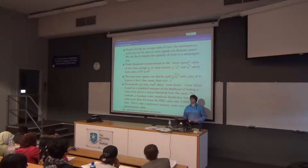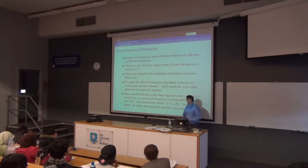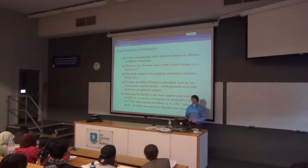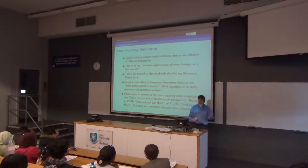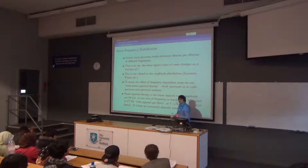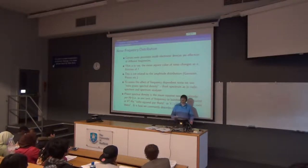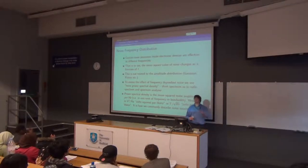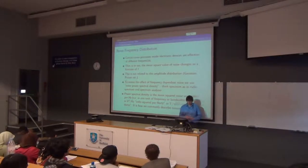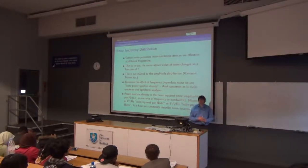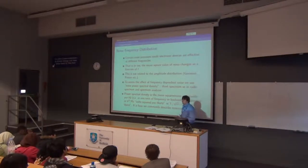Crest factor also turns up in audio — especially old VU meters, which use specifications of crest factor. If you buy a true RMS meter, the way they calculate the RMS is for a sine wave; if you put a triangle wave in, it will give you the wrong RMS value. But there is a fudge factor related to the crest factor. So crest factor turns up in signals we know about as well as random signals. The other thing we have to talk about is that noise changes with frequency — so not only is there this amplitude distribution, there is also some change with frequency.